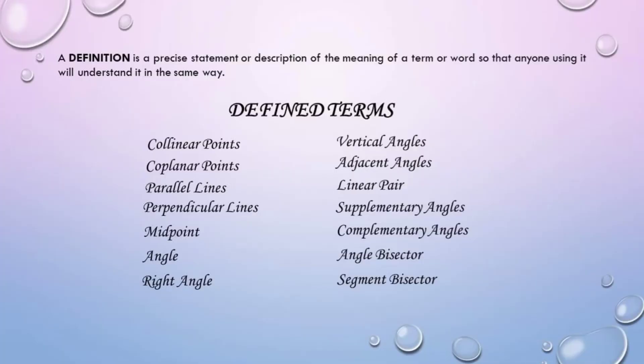A definition is a precise statement or description of the meaning of a term or word so that anyone using it will understand it in the same way. Of course, we need to have the same definition so that we can understand each other, because if we have different definitions, we won't understand each other.